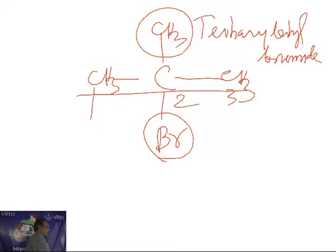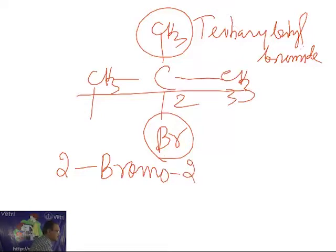So in that case here position 2 there is 2-bromo. Then in 2 again there is methyl. How many carbon parent? 3-propane.